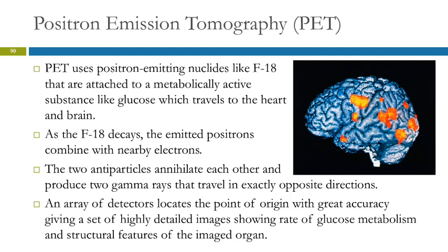You may have heard of a PET scan — positron emission tomography — which is different from a CAT scan. This uses positron-emitting nuclides like fluorine-18, which get attached to metabolically active substances like glucose. You give the person the glucose with F-18 on it, and that glucose travels to the heart and brain, allowing you to image those organs.